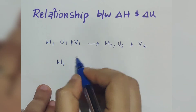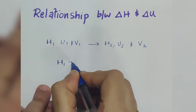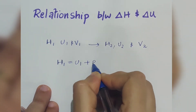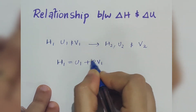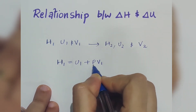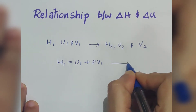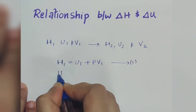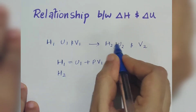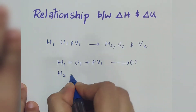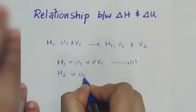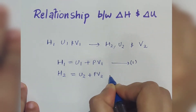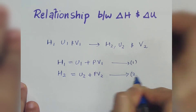Then H1 is equal to U1 plus PV1, where pressure P is constant. This is equation number 1. For the final state, H2 is equal to U2 plus PV2. This is equation number 2.